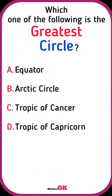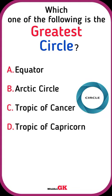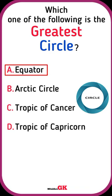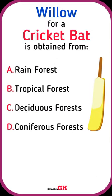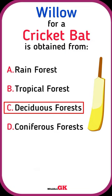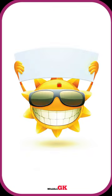deserts. Which one of the following is the greatest circle? Equator. Willow for a cricket bat is obtained from deciduous forests.